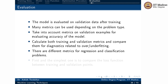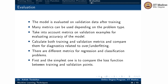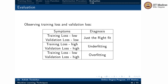There are different metrics for regression and classification problems. The simplest one to compare is the loss function between training and validation points. If the training loss is low and so is the validation loss, it is just the right fit. If both are high, that is underfitting. If training loss is low and validation loss is high, that is overfitting.